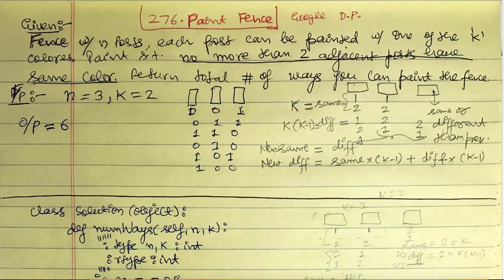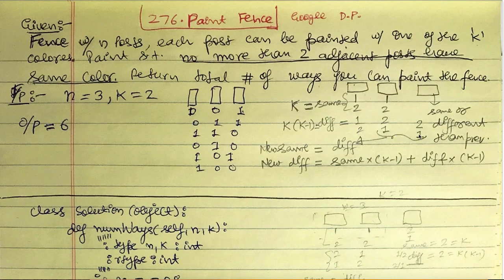When we move from two pillars to three pillars, there are two cases: we can paint the third pillar the same color as the second, or a different color. If we paint the third pillar the same as the second, the color cannot repeat more than twice, so the first pillar must be a different color than the second. This corresponds to the diff case for n=2. So the key observation is: new_same = previous diff.